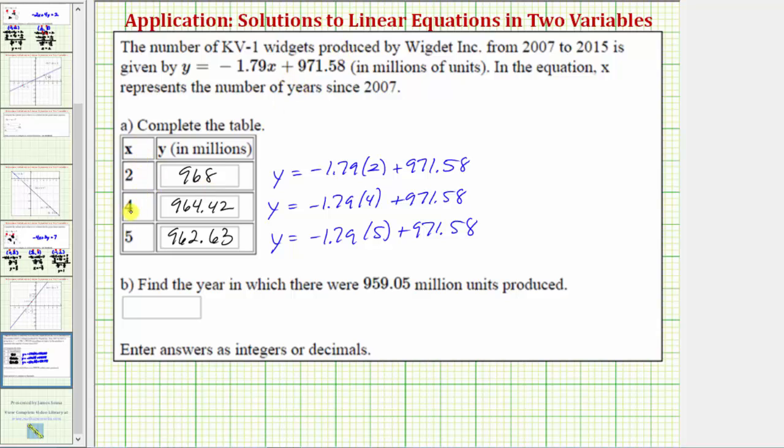X equals four corresponds to the year 2007 plus four, or 2011. So this row tells us in 2011, the company produced 964.42 million widgets. And the last row tells us in the year 2012, the company produced 962.63 million widgets.